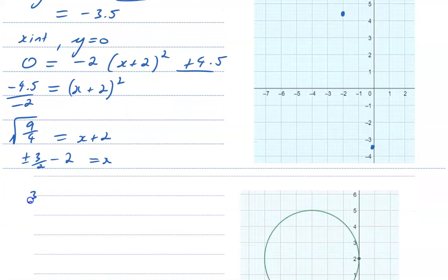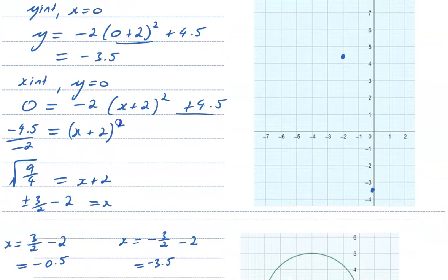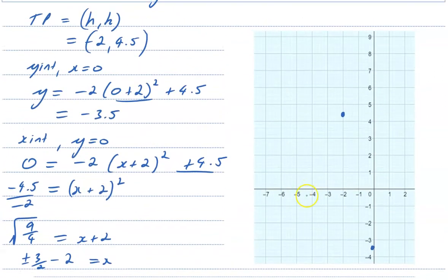So we'll have 3 over 2 minus 2 is one of our x-intercepts. And our other x-intercept is negative 3 over 2 minus 2. So 1.5 minus 2 is negative 0.5, and negative 1.5 minus 2 is negative 3.5. Now to plot those points, we can go to negative 0.5 and negative 3.5.